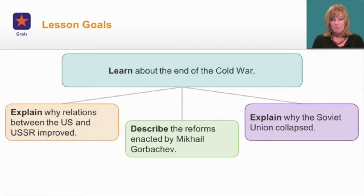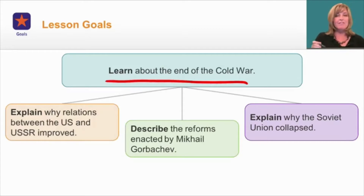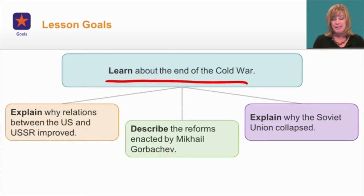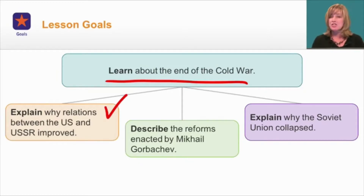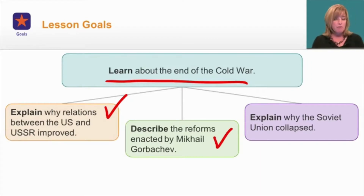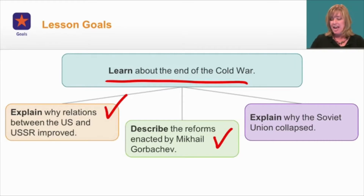In this lesson, we're going to be learning about the end of the Cold War, and we're going to look at this topic in three parts. First, we're going to explain why relations between the U.S. and the Soviet Union began to improve. Then we're going to take a look at the reforms enacted by Soviet president Mikhail Gorbachev. And finally, we're going to take a look at why the Soviet Union collapsed.